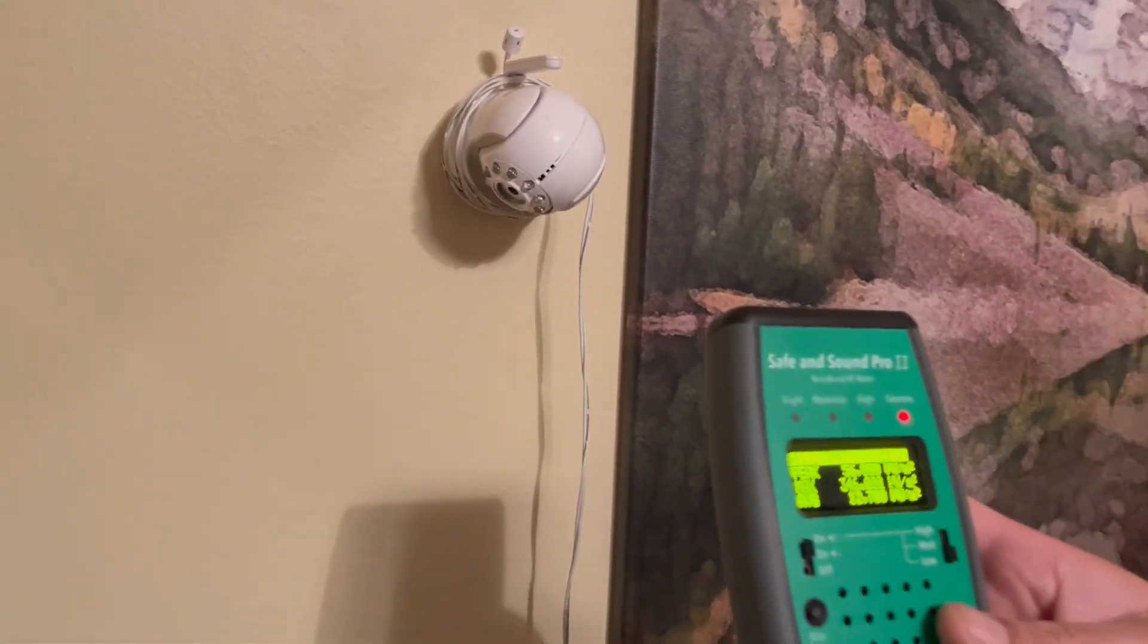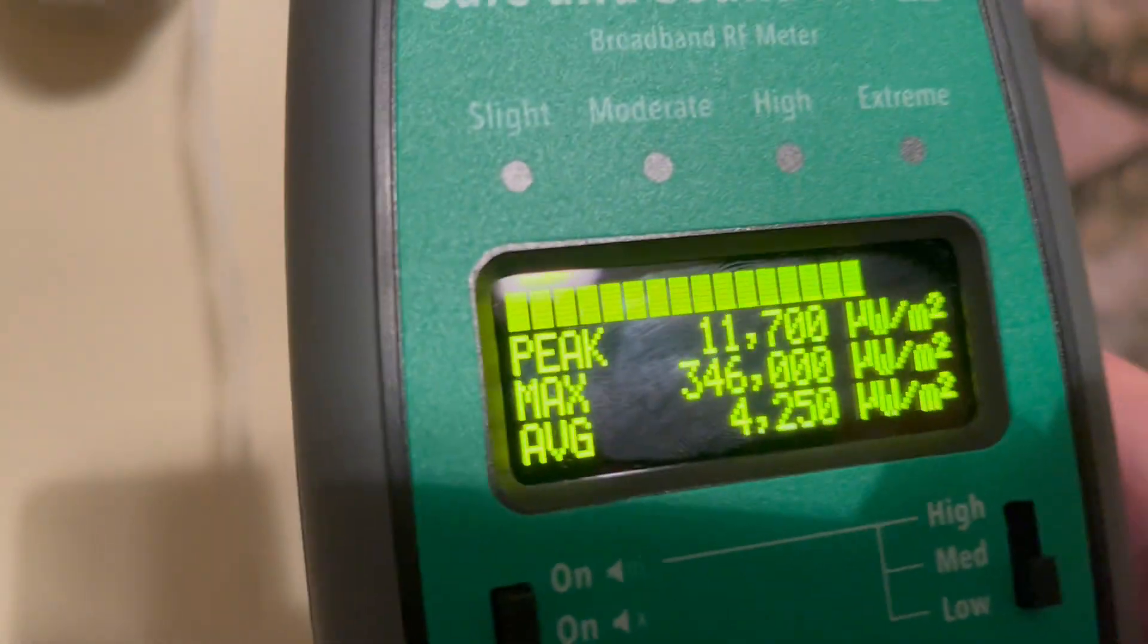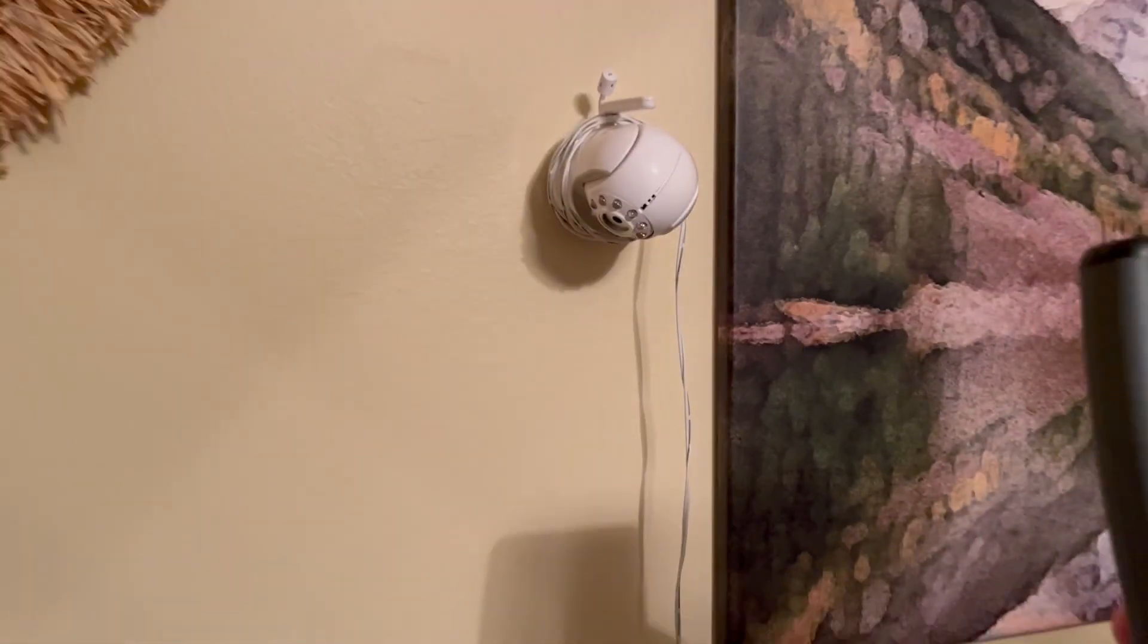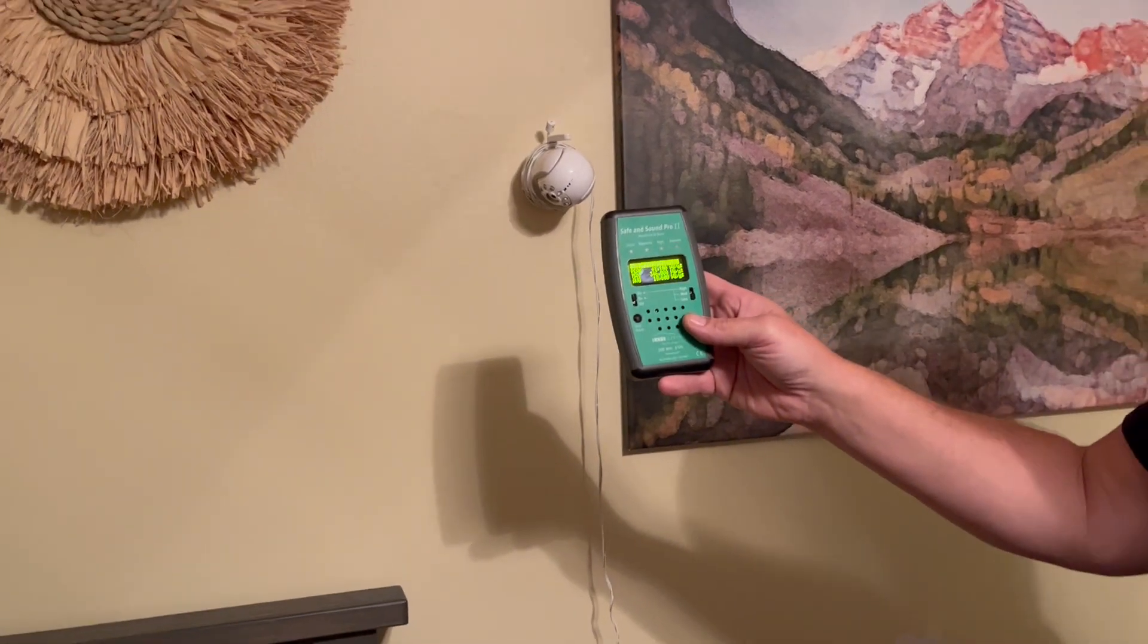It still transmits a radio frequency and it's only a few feet from the baby's head. The Building Biology safety level is below 10 microwatts per square meter, and we're at 3,346,000. So we're several hundred times higher than the safety level.